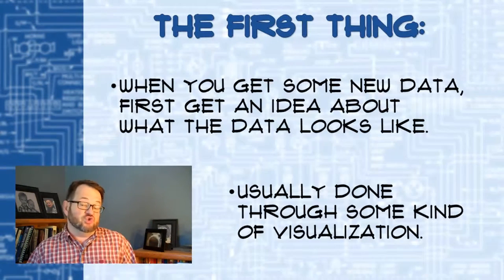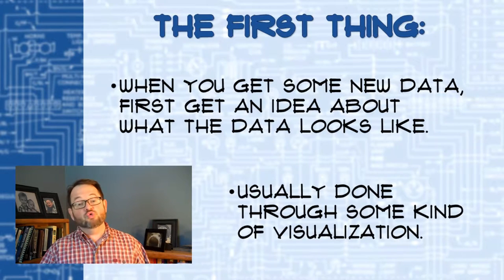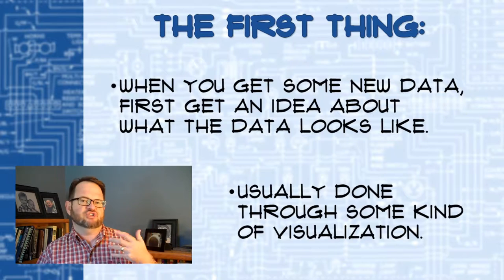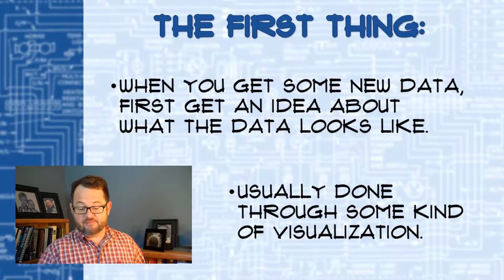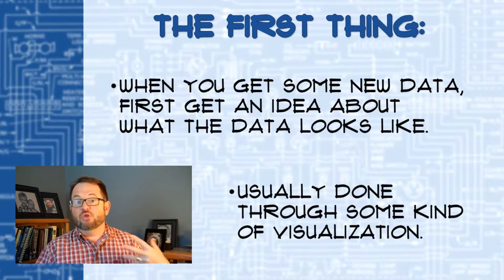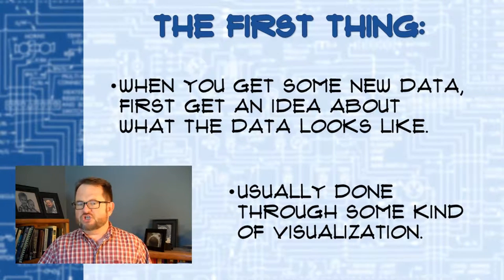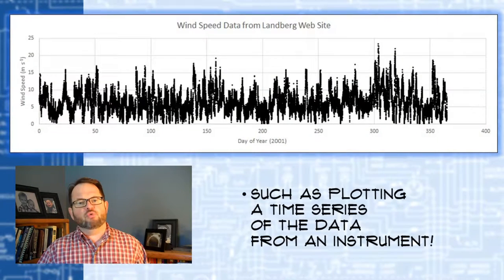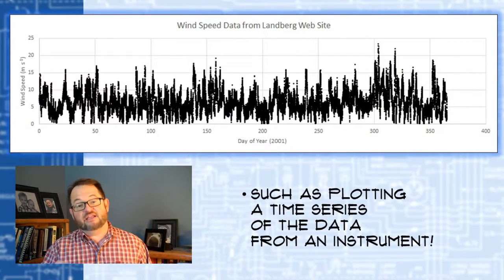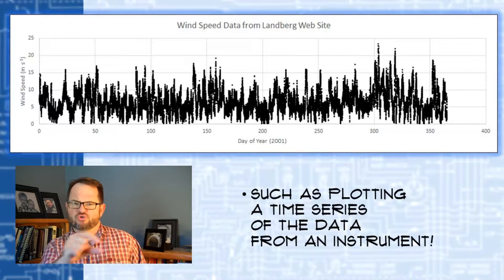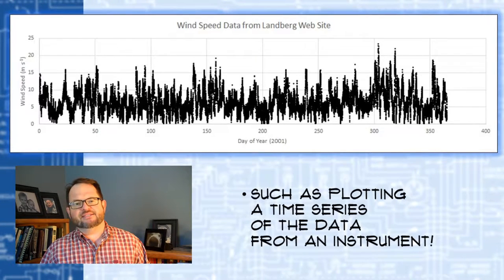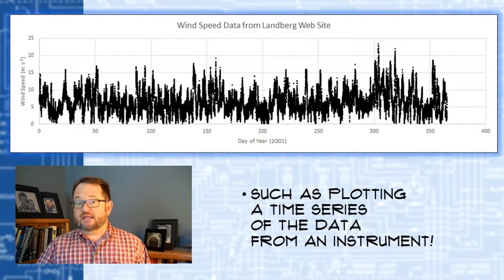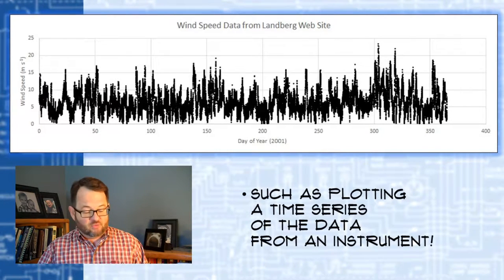The book suggests that the first thing you should do any time you get some new data set — like observations from a wind station at your prospective site for a wind power plant — is to get an idea of what that data looks like. This is usually done through some kind of visualization. Your textbook takes the data set available from the author's website; there's a QR code you can use to get that, or I can send you the link if you have trouble.